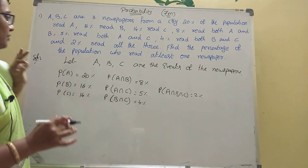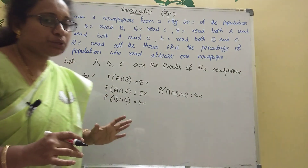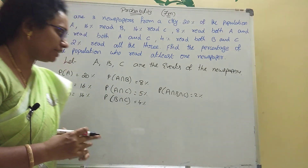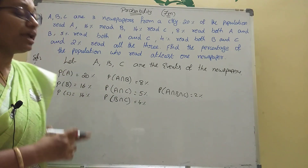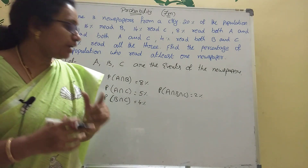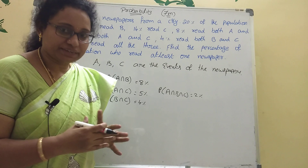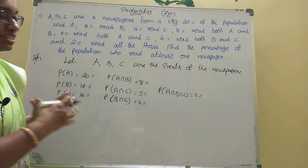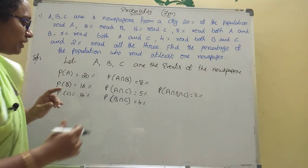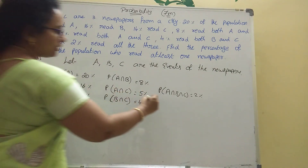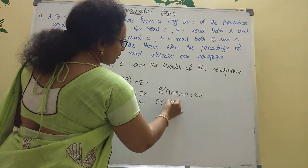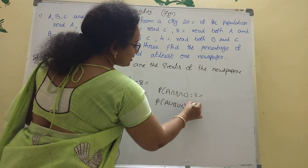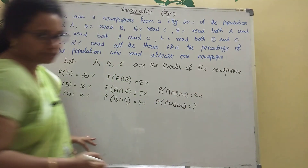Find the percentage of the population who read at least one newspaper. The formula we need is P of A union B union C. That is the question.